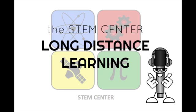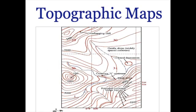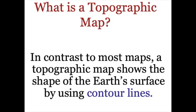Okay, welcome to the long distance learning for topographical maps. Today we're going to be taking a look at topographical maps and trying to understand how they work. In contrast to most maps, a topographical map shows the shape of the earth's surface by using contour lines.